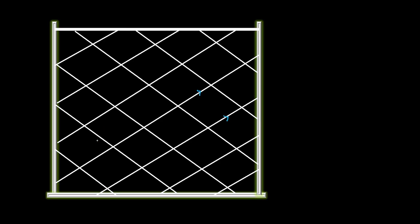I ordered a frame on Amazon. It came with some wooden planks which I wanted to arrange in a criss-cross pattern such that these planks are placed parallel to each other. Now if I start placing planks one after the other, how do I ensure that they are exactly parallel to each other?